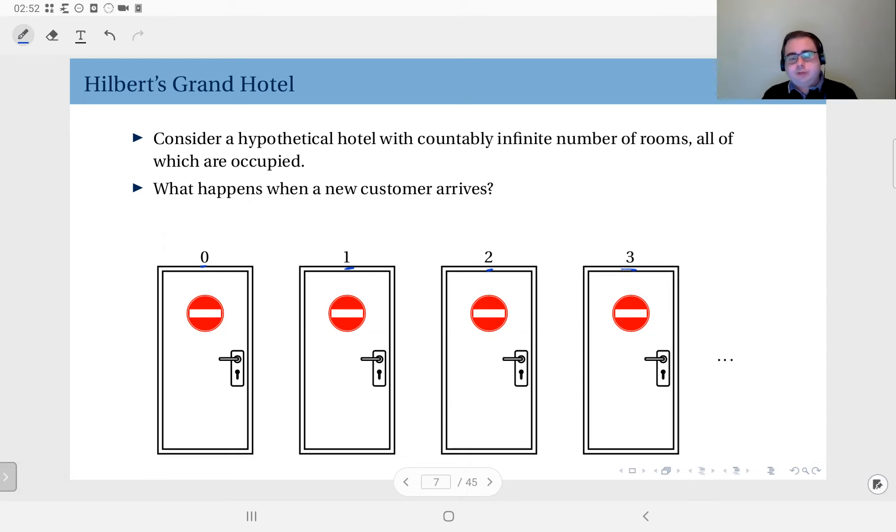So, what you do is, you move each and every customer in the hotel to the successor room. So, zero goes to one, one goes to two, two goes to three, et cetera. All of them move one room up. So, this is a function and it's a bijection, x plus one. But what it does is, it clears room number zero.